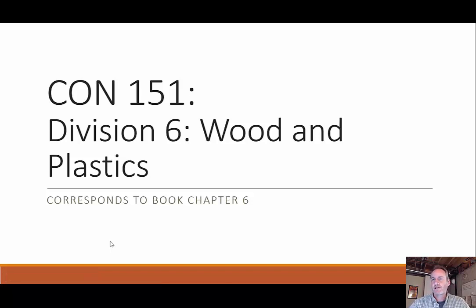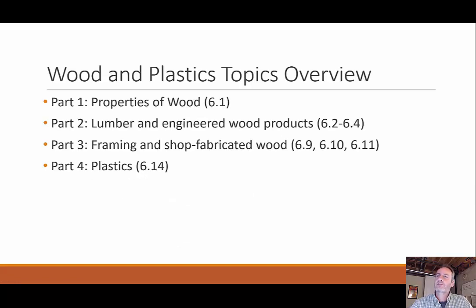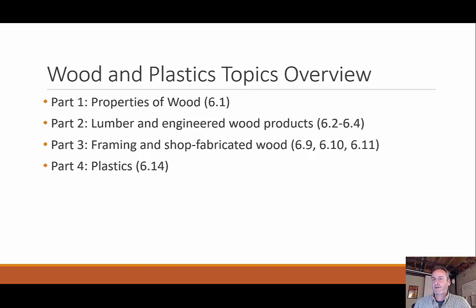Welcome back everyone. We're going to change topics now and move over to wood and plastics. This is division six from the master format and corresponds to book chapter six. It's going to be broken into four different parts: the properties of wood, which we'll cover this time, then lumber and engineered wood products, then part three, framing and shop fabricated wood, and finally part four, plastics.